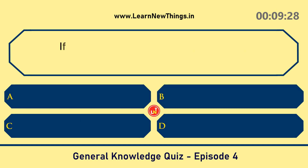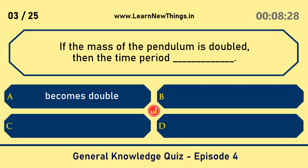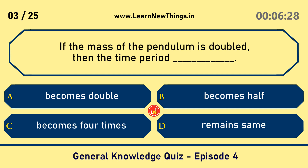If the mass of the pendulum is doubled, then the time period — remains same.